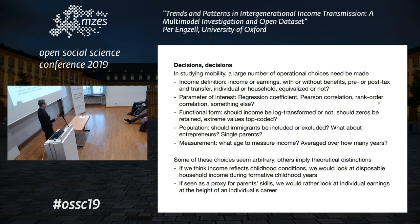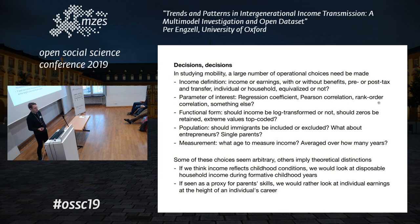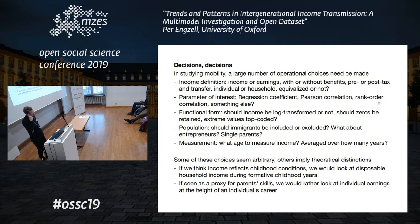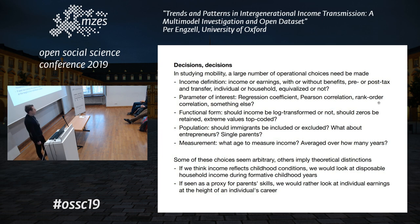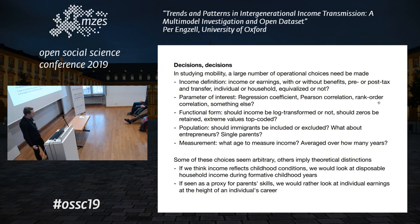In looking at income, there are a large number of choices of definition and coding. Do we talk about income or earnings, with or without benefits, pre or post tax and transfer? Do we study the individual or household as the unit? If the latter, do we equalize by household size or not? There are also different parameters of association: regression coefficients, correlations, rank correlations. There are decisions about whether to log income or not, how to handle extreme values, zero or negative incomes, and what age to measure income and how many years to average over.